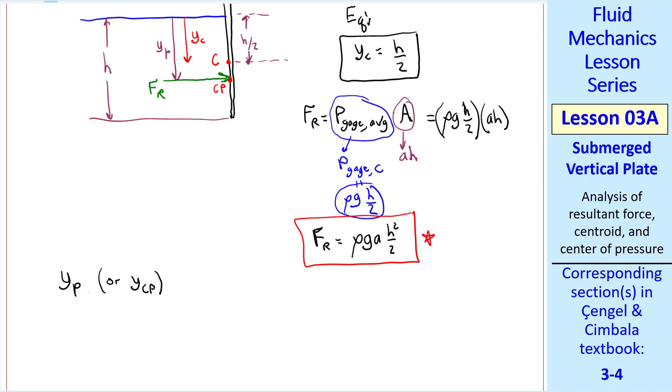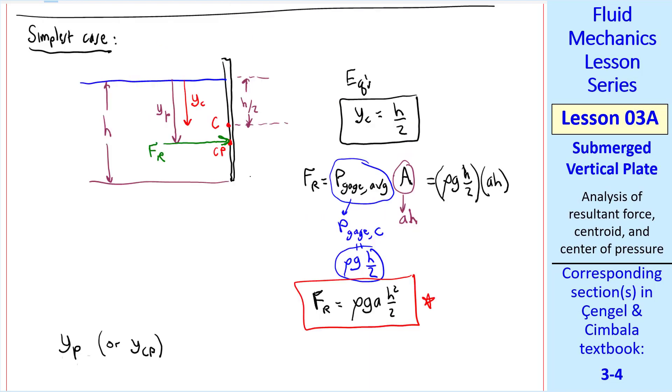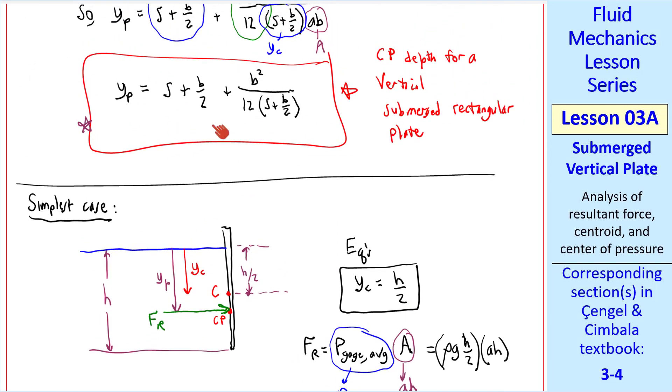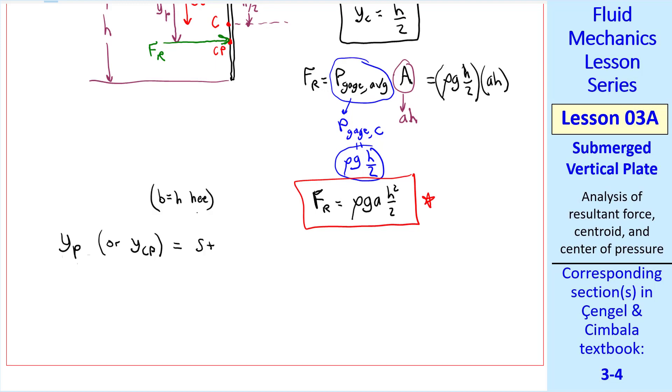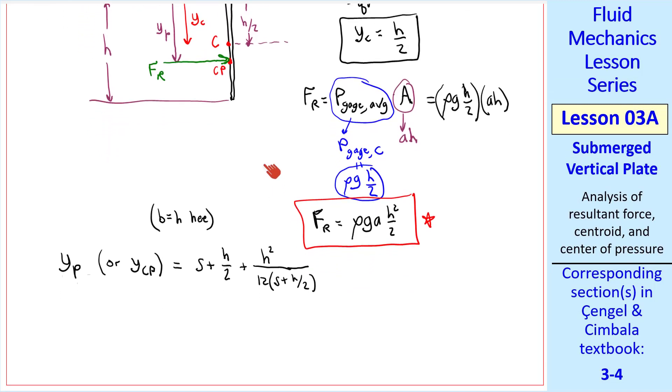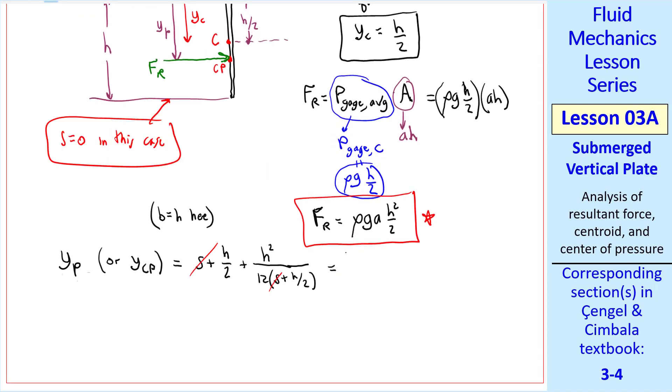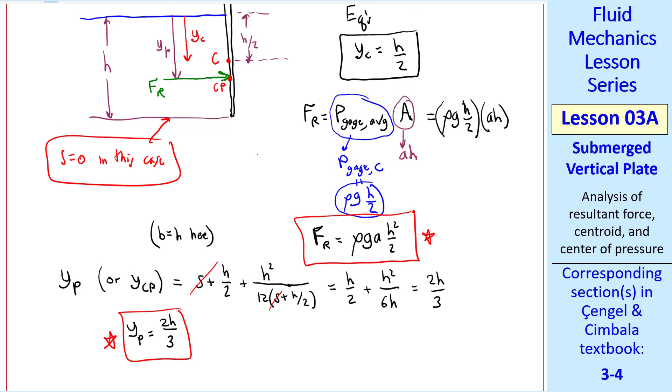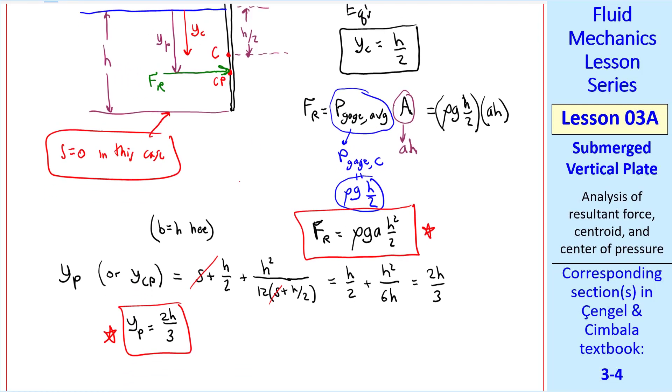YP, sometimes I'll call this YCP, the depth to the center of pressure, is given by this expression up here. So let's do that for this simplified case, noting that B equal H here. So YP is S plus H over 2 plus H squared over 12, quantity S plus H over 2. In our case here, S, which is the depth from the surface to the top of the plate, that is the top of the submerged plate, so S equals 0 here. So S drops out, and so YP becomes H over 2 plus H squared over 6H, or 2H over 3. So YP is 2H over 3 for this simplified case of a vertical plate extending up through the surface.